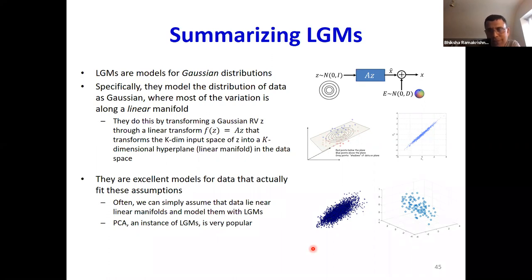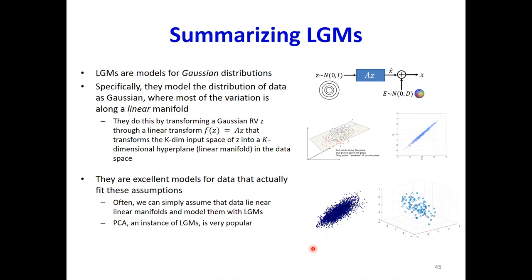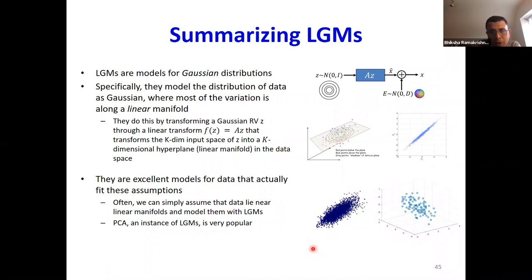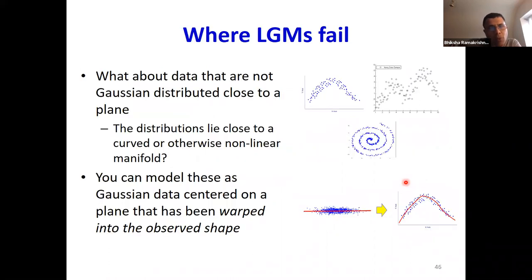I'm going through all of this to give you an idea of this kind of generative model, which is very simple — we are very familiar with Gaussians and linear transforms. This only works for data that actually have this kind of distribution, which are roughly Gaussian and lie close to a plane. But what about data that are not Gaussian distributed or not close to a plane — data whose distributions look like these funky non-Gaussian shapes?